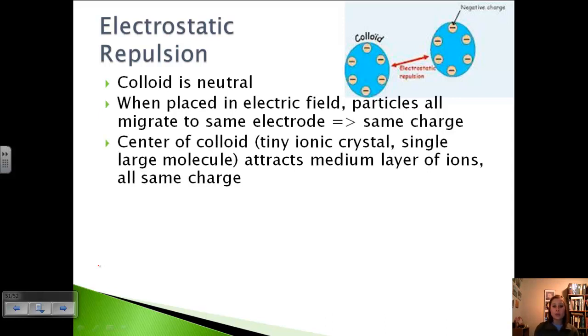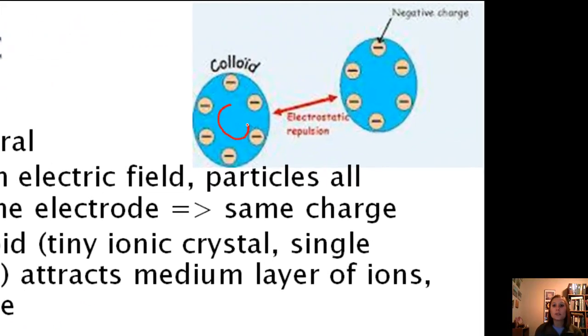So when we look at what makes up a colloid, what we see is that the center is either a tiny ionic crystal, a single large molecule, or actually also a bunch of tiny molecules. And they will attract this medium layer of ions that are all the same charge. And so if we look at this picture up here, this would be our center. And then we've got this layer of ions, and they're all the same charge.